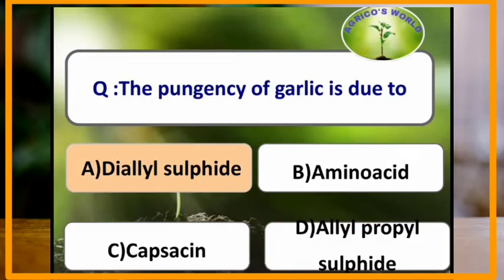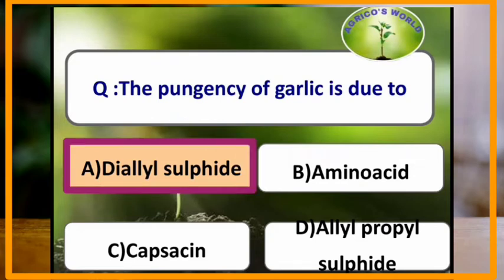The pungency of garlic is due to which chemical? The pungency of garlic is due to the presence of diallyl sulphide.